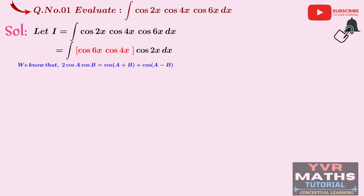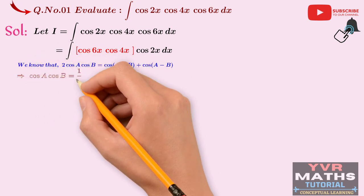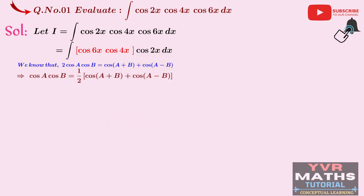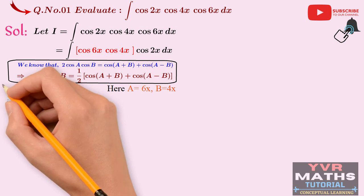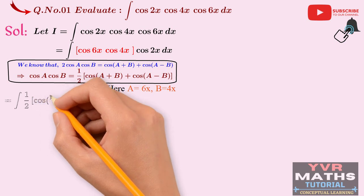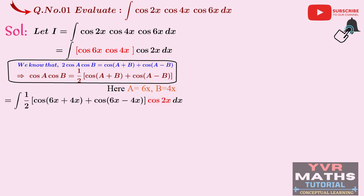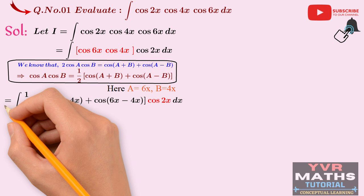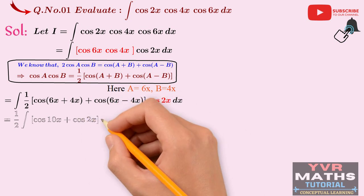Substituting A = 6x and B = 4x into the identity, we get: integral ½·[cos(6x+4x) + cos(6x−4x)]·cos(2x) dx. Simplifying: ½ · integral [cos(10x) + cos(2x)]·cos(2x) dx. Expanding: ½ · integral [cos(10x)·cos(2x) + cos(2x)·cos(2x)] dx.